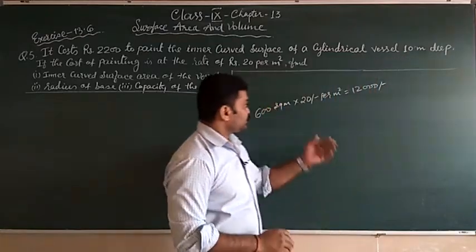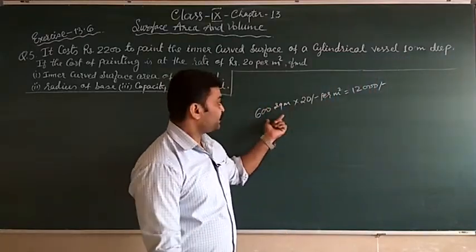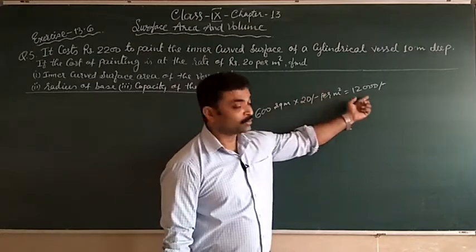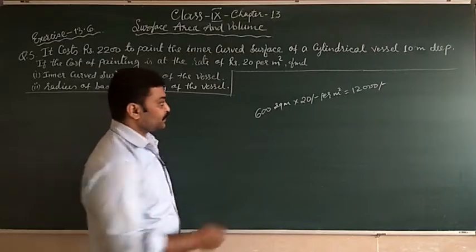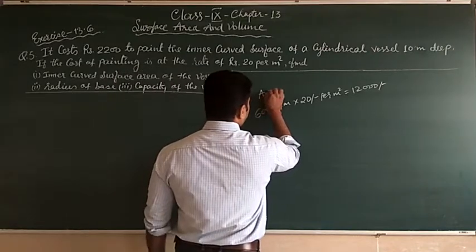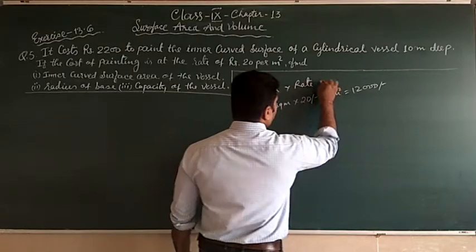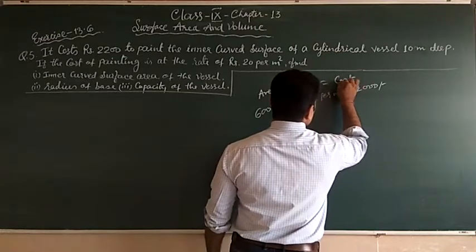What we did was multiply the rate by the area and found the total cost. So here we have area, rate, and cost.